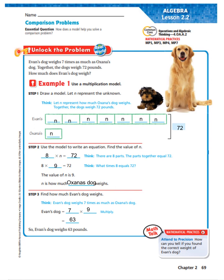Let's unlock the problem. Evan's dog weighs seven times as much as Oxana's dog. Together the dogs weigh 72 pounds. How much does Evan's dog weigh? I know that Evan's dog weighs seven times as many, and combined the dogs weigh 72 pounds. That's very important.